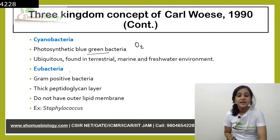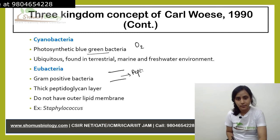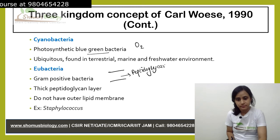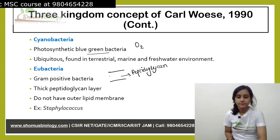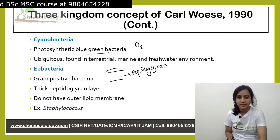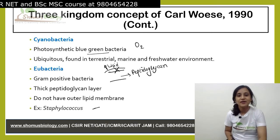Eubacteria. These are gram-positive bacteria. They have a thick peptidoglycan layer and can take up gram stain. They do not have an outer lipid membrane. An example is Staphylococcus.